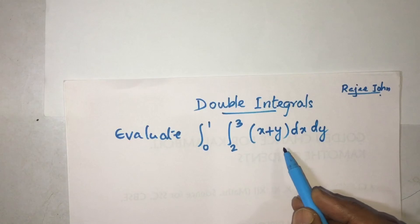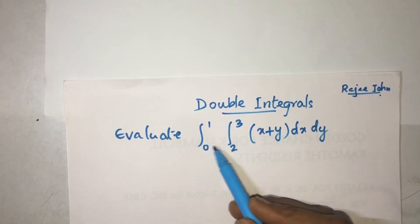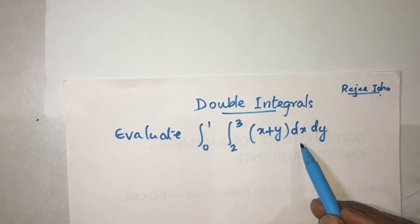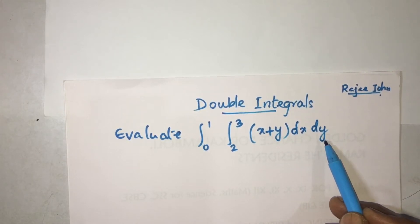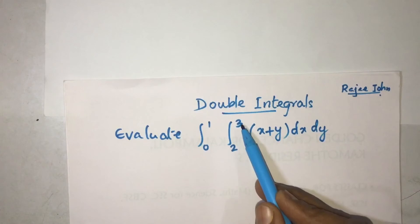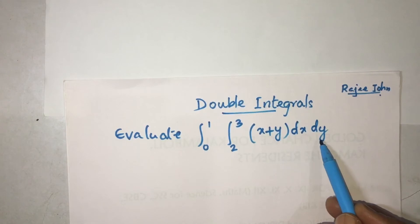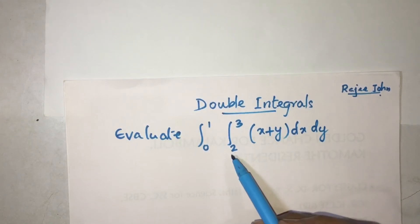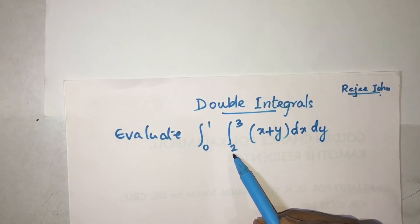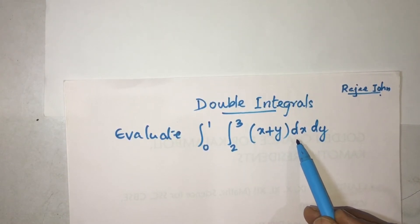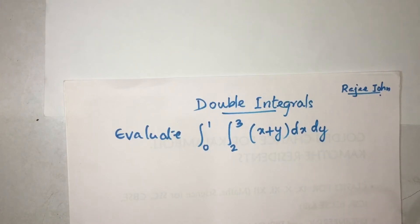Now let's see how to integrate these terms. Here both the limits of this integration are constants, so you have to integrate this first with respect to x and then with respect to y. Since the limits of integration are constants, you can also integrate first with respect to y and then with respect to x. But if the limits of integration have some variables — say something like 2y to y squared — then you cannot change the order of integration.